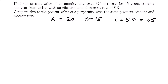Before proceeding, it's important to note that just like an annuity requires the first payment to start one year from today in order to use this formula, a perpetuity also requires that. The type of annuity and perpetuity we are calculating here requires that the first payment be made one year from today.